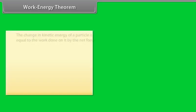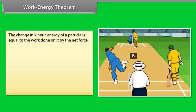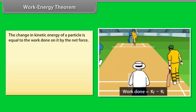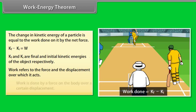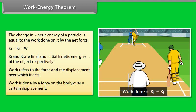Work energy theorem: The change in kinetic energy of a particle is equal to the work done on it by the net force. Kf minus ki is equal to w. Here kf and ki are final and initial kinetic energies of the object respectively. Work refers to the force and the displacement over which it acts. Work is done by a force on the body over a certain displacement.